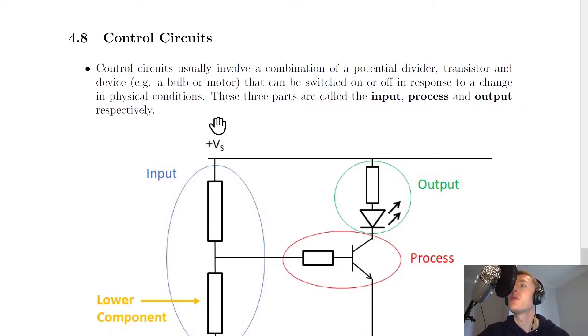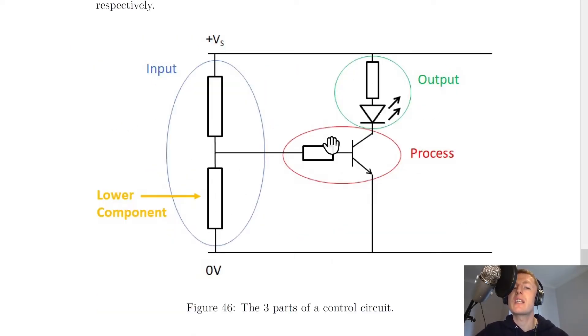These three parts are called the input, process, and output respectively. If we look at this diagram, we've got this input on the left-hand side, the process in the middle, and the output over here. This is our control circuit.